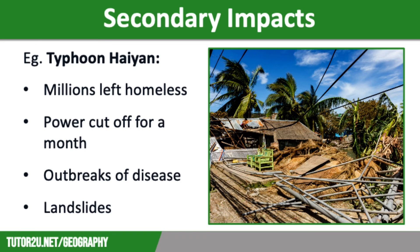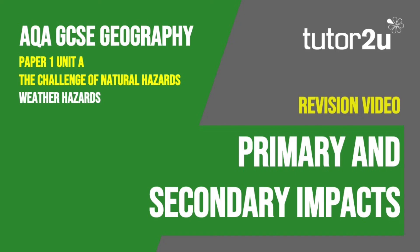Finally, many jobs were lost, hospitals were damaged, and shops and schools were destroyed. These all affected people's livelihoods as well as their access to health and education. That concludes this Tutor2U revision video focusing on the primary and secondary impacts of weather hazards. Thank you for watching.